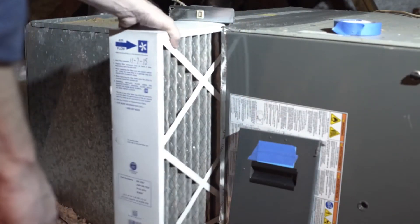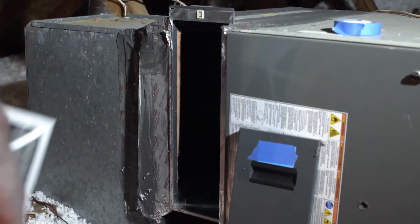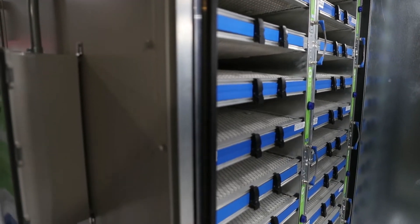Technology-wise, there's sort of two bookends of taking stuff out of the air. There's passive filters, which are essentially a sieve. The smaller the holes in the sieve, the more efficient the filter, but also the harder it is to push air through it. The other bookend is the traditional electrostatic air cleaner, which works through electrostatic attraction, and we're sort of a combination of the two.